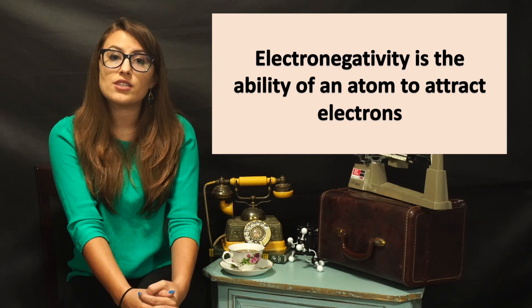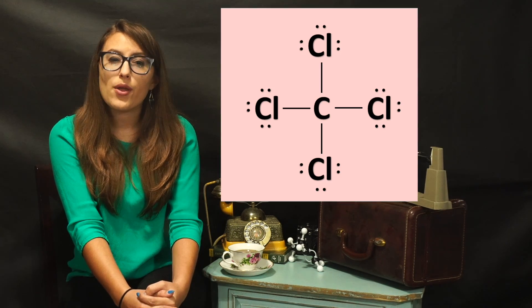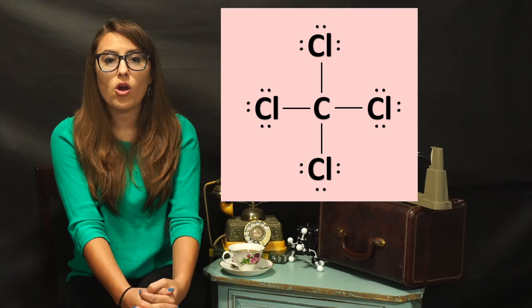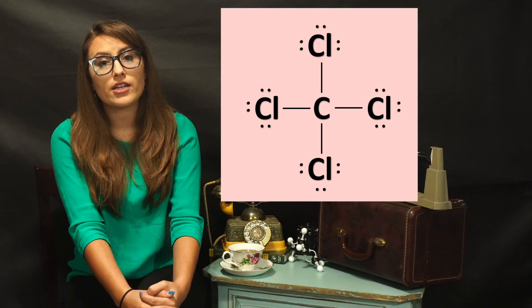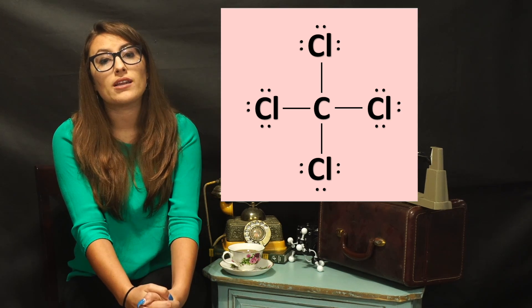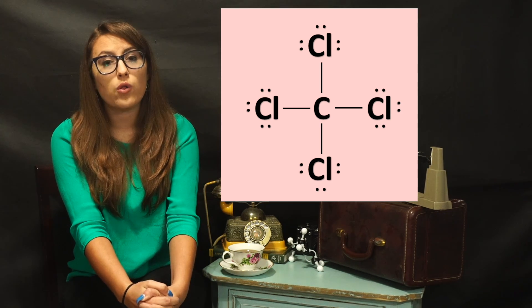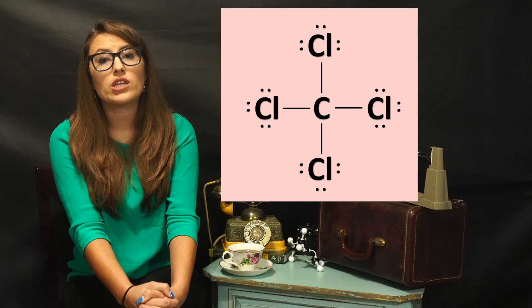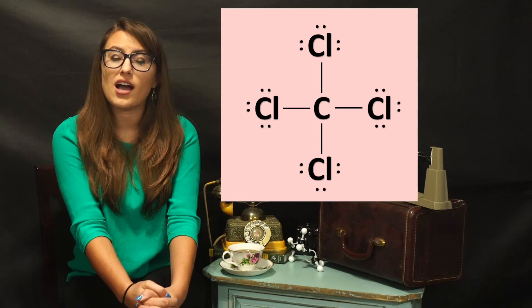An example of this is with carbon tetrachloride. When we compare chlorine and carbon, chlorine is far more electronegative because it attracts electrons better. This would make carbon less electronegative than the chlorine's because chlorine only needs one electron to complete its octet.